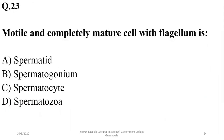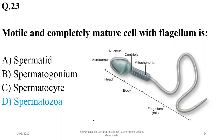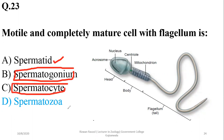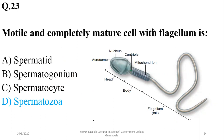Number twenty-three: a motile and completely mature cell with a flagellum is obviously a spermatozoon — a sperm. Spermatids are the state before formation of sperms in the process of spermatogenesis. Spermatogonia are the germline cells, and spermatocytes may be primary or secondary, but the final cell formed after complete meiosis and maturation is the sperm. So the right option will be delta.